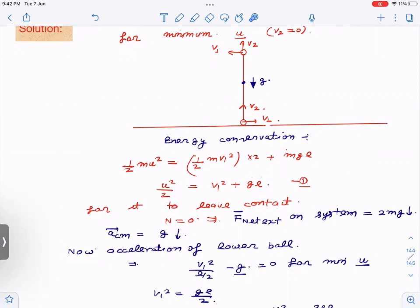If acceleration of center of mass is g downward, now let us see what will be the acceleration of this ball with respect to center of mass. With respect to center of mass, this will be rotating in a circle of radius L by 2. So with respect to center of mass, its acceleration is V2 squared by R divided by L by 2. But center of mass is moving down with g. So its net acceleration is V1 squared by L by 2 minus g.